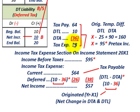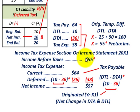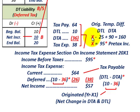What we want to report is the tax expense and how it reduces our income before taxes. Looking at income before taxes — that's the pre-tax financial income of $95,000 that we calculated — that was our X amount.